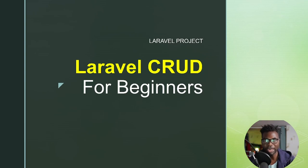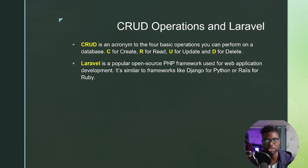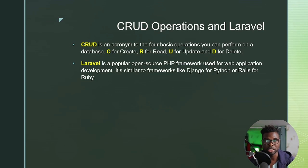Welcome back to my channel, my name is Setson. In today's video we're going to look at Laravel CRUD for beginners. CRUD is an acronym for the four basic operations you can perform on a database: C is for Create, R is for Read, U is for Update, and D is for Delete.